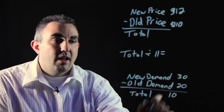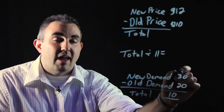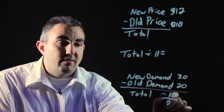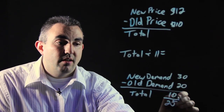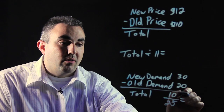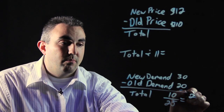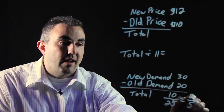And you divide that by the average of 30 and 20, which is 25. And that will give you, in a reduced form, 2 over 5.